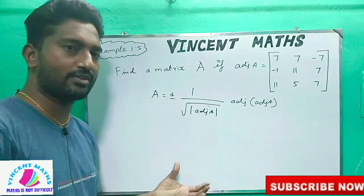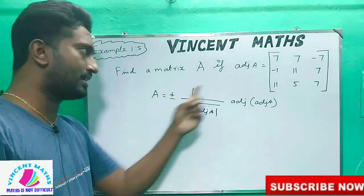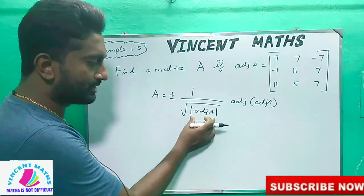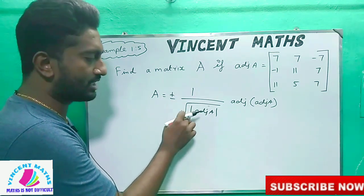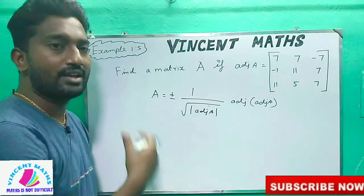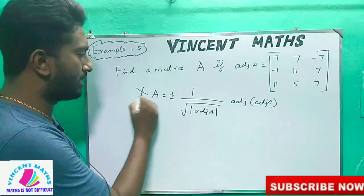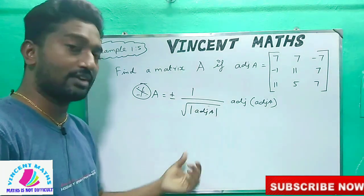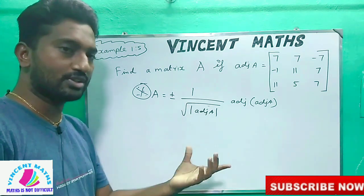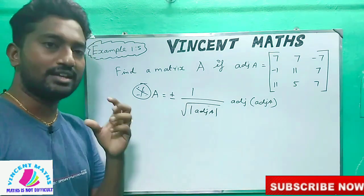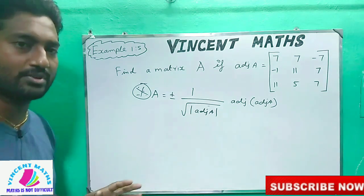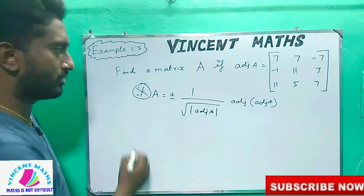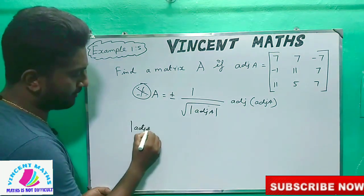A negative number is coming in — if we compute the determinant of A, it gives a negative number. That means we get an imaginary number, which is a different scenario. So instead, what we can do is compute the determinant of the Adjoint of A.